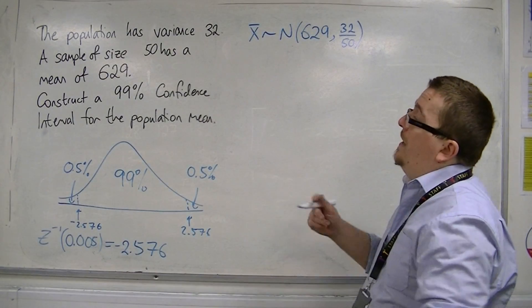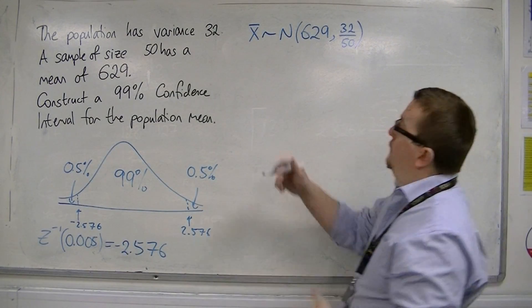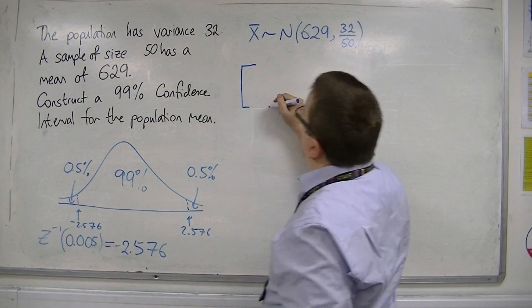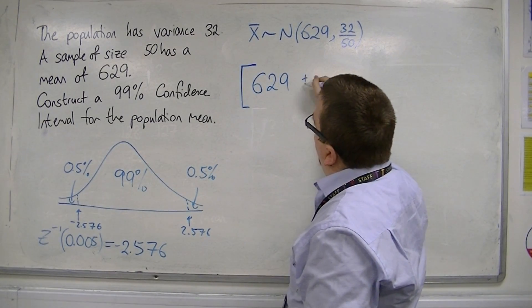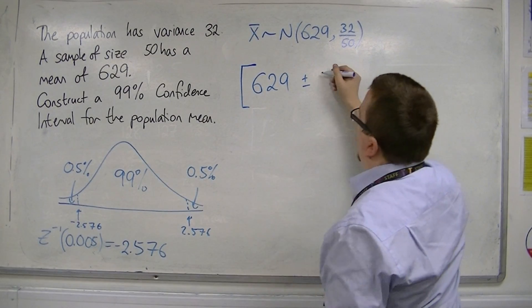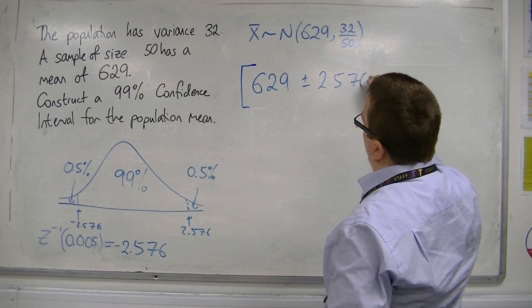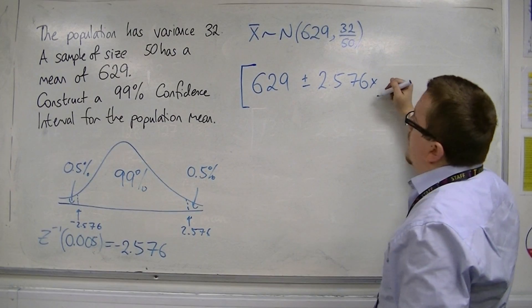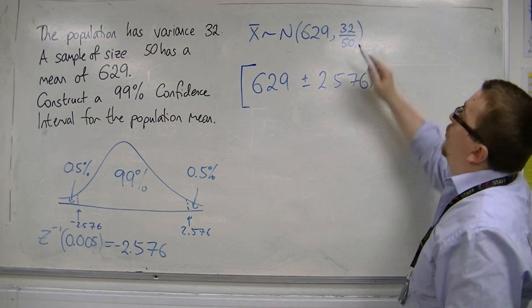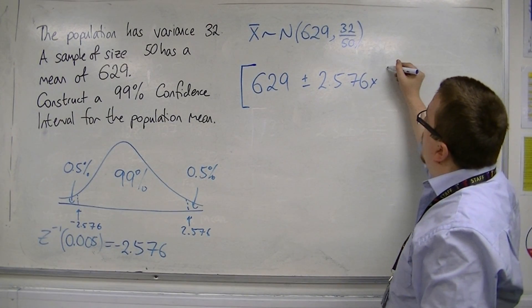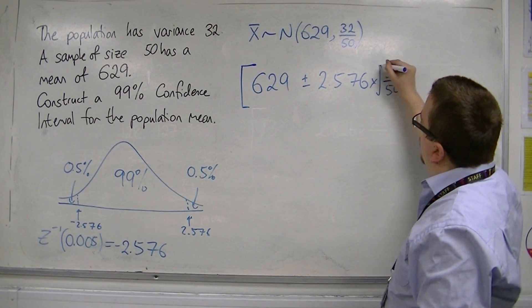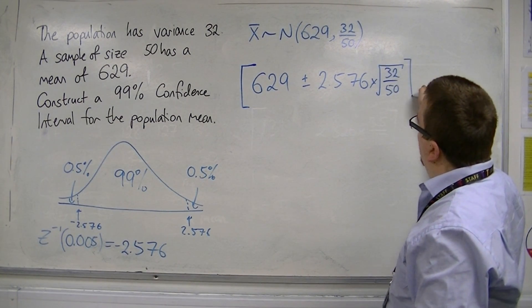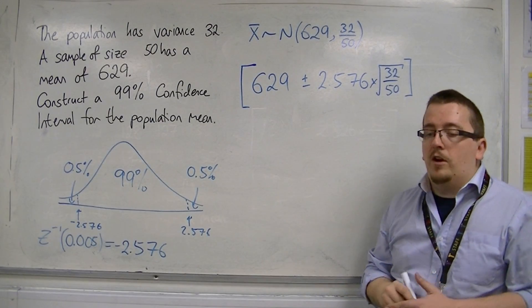So, that means our confidence interval is going to be equal to 629, the mean, plus or minus the z-value, 2.576, times by the standard error, which is this variance square rooted. So, 32 over 50, square rooted, that's going to be our confidence interval.